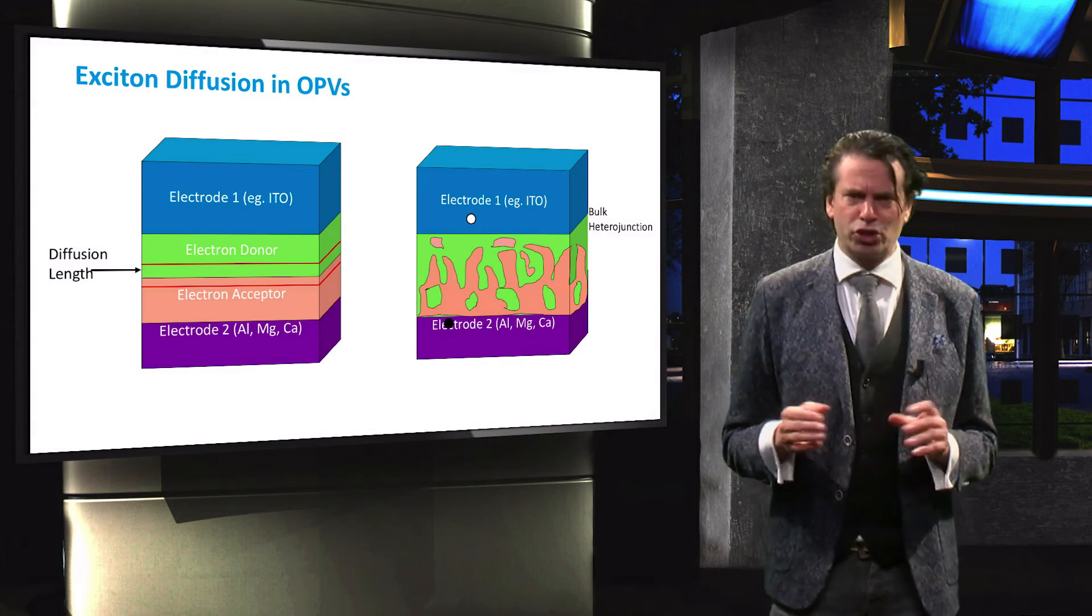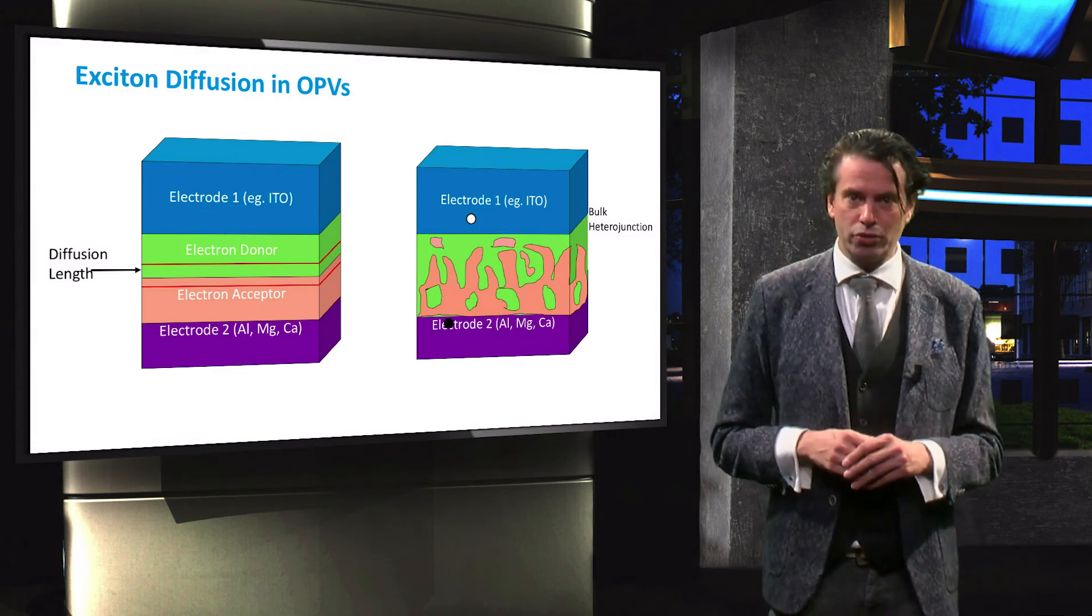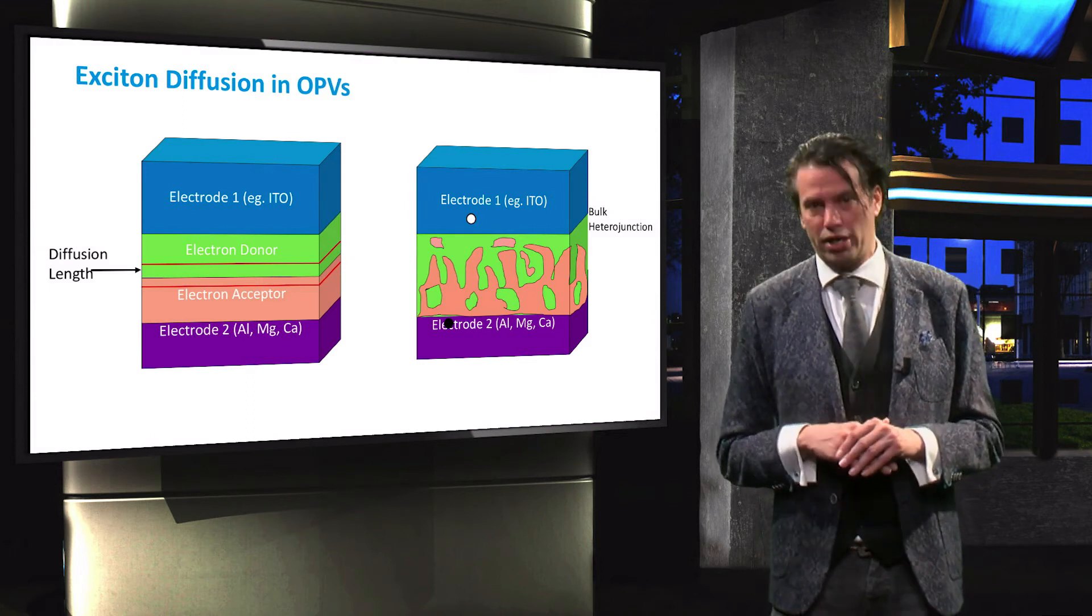The separated electrons travel through the acceptor layers and are collected at the metal electrode, while the holes move through the donor material and are collected at the front ITO electrode.